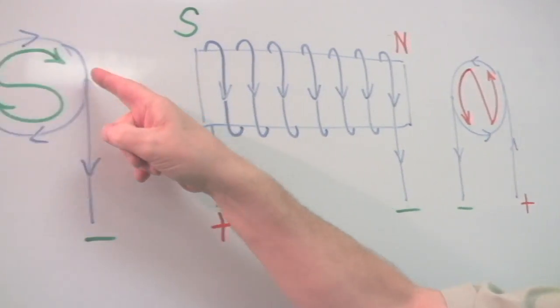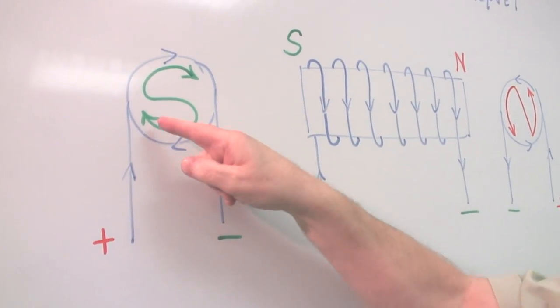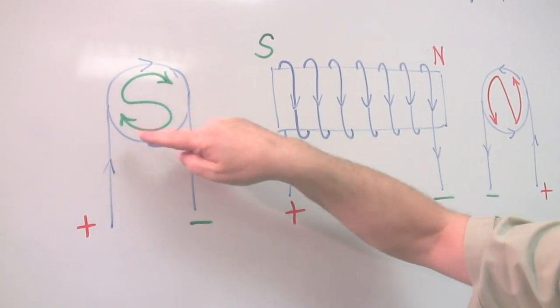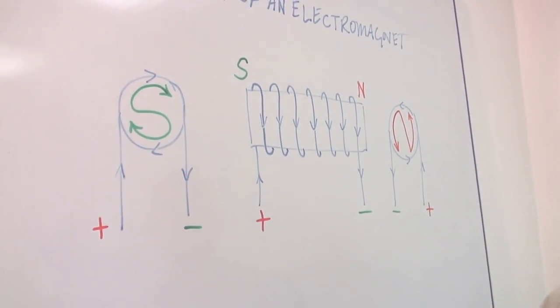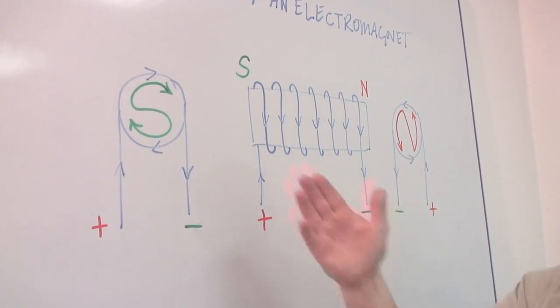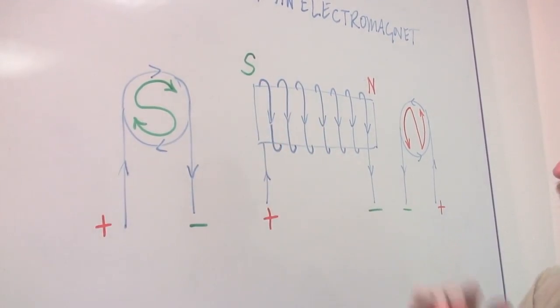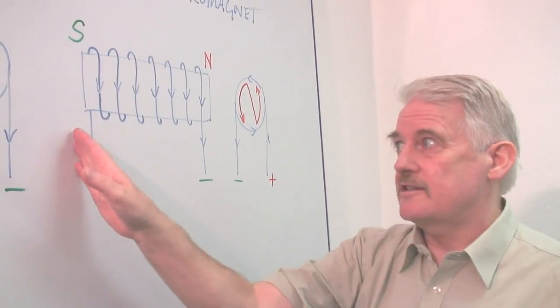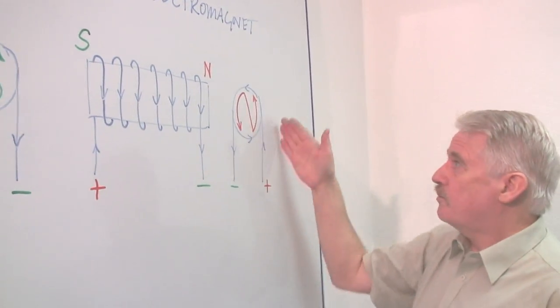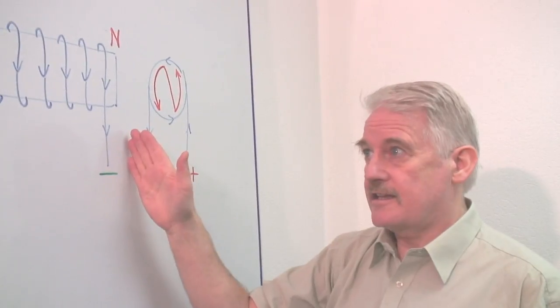But if we draw an S and put arrows on the end of it, and it goes in the same way as the arrows of the current from that view, then we have found a south pole. So in this way, we can identify a south pole, and it turns out the south pole is at this end. And a north pole, it turns out the north pole is at this end.